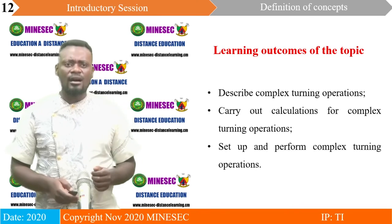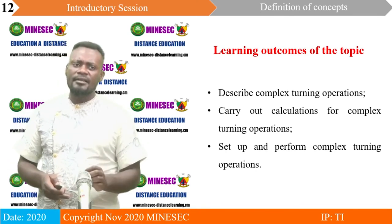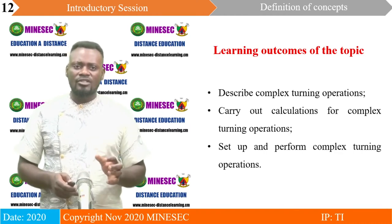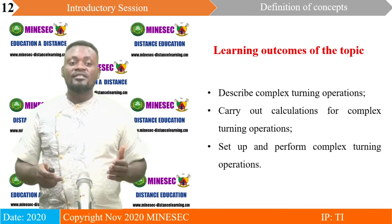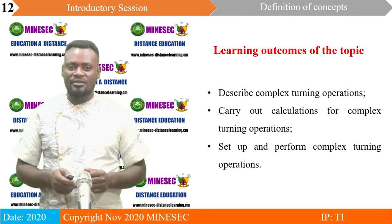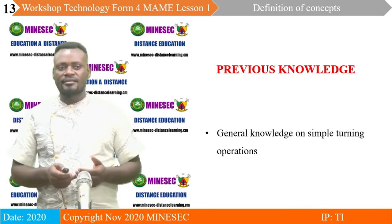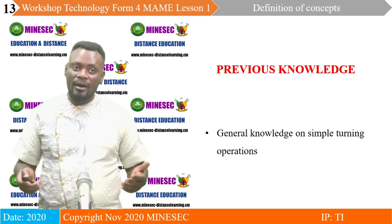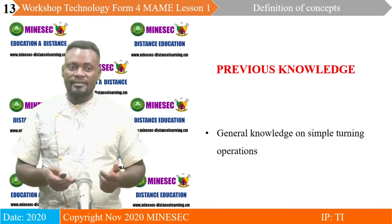Under learning outcomes of the topic, you should be able to describe complex turning operations, carry out calculations for complex turning operations, and set up and perform complex turning operations. For the previous knowledge, a general knowledge on simple turning operations is what you must have acquired before continuing with these complex turning operations.